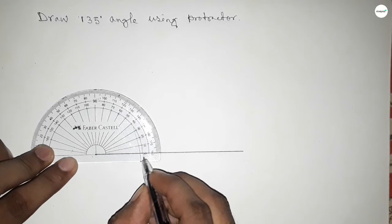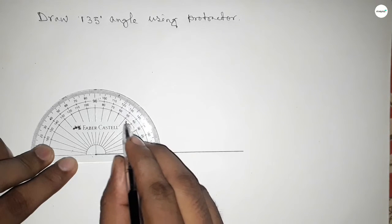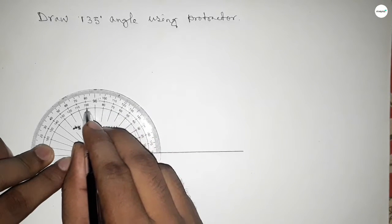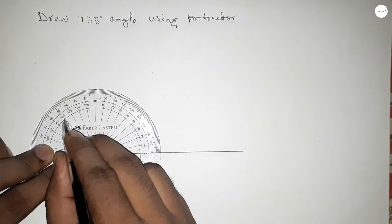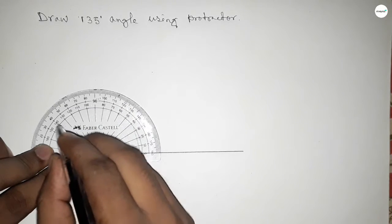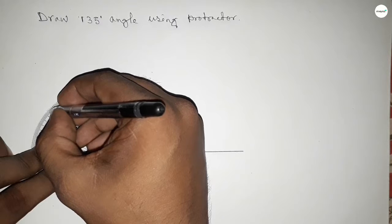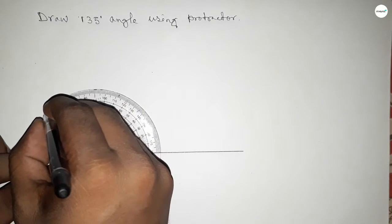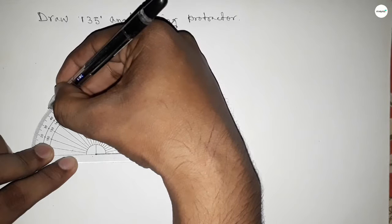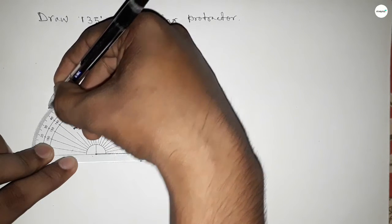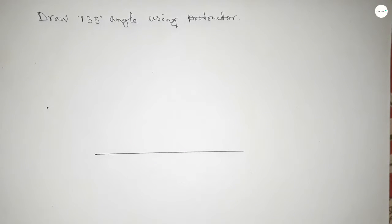So starting, this is 0, 10, 20, 30, 40, 50, 60, 70, 80, 90, 100, 110, 120, 130, and 140. So between 130 and 140 we can get a 135-degree angle. So this is the 135-degree angle now.